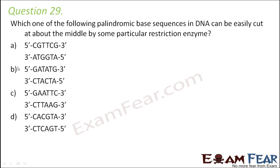Question number 29. Which one of the following palindromic sequences in DNA can be easily cut at about the middle by a particular restriction enzyme? A palindromic sequence is one which reads the same from right to left as it reads from left to right. For any sequence to be easily cut by a restriction enzyme, it is important that the two strands of the sequence are complementary to each other.